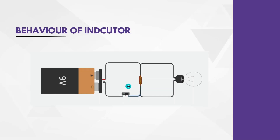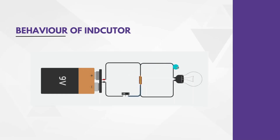Now, suppose I open this switch — there will be some amount of energy stored in this inductor, and what it will now do is start releasing that energy. But since it is an open circuit, this energy cannot reach the battery. So the energy will start flowing towards the bulb, which means we can see the bulb will be turned on until all the energy from this inductor is released. When I again turn on the switch, the inductor will get charged, and when I again turn off the switch, all the stored charge it will give to the bulb, which will in turn make the bulb glow. So this is the behavior of an inductor.